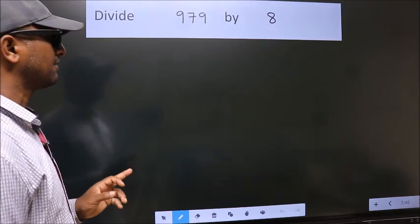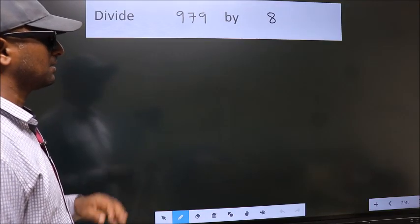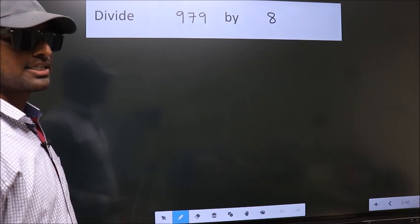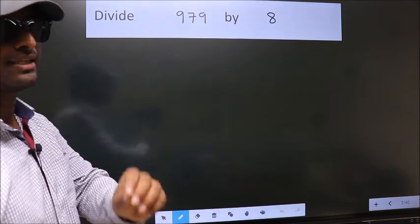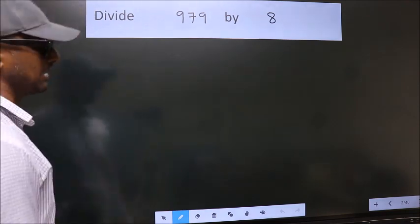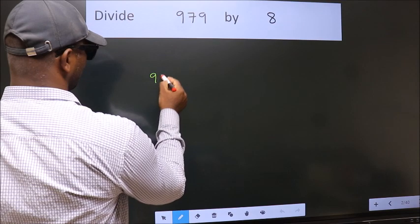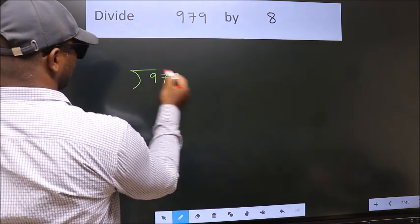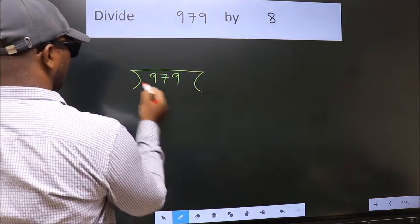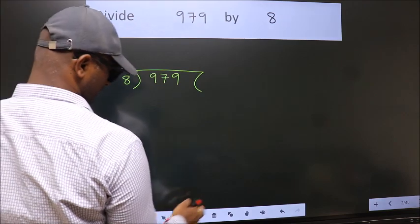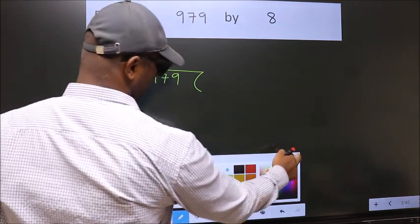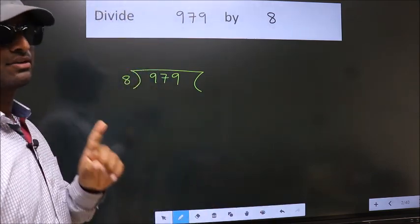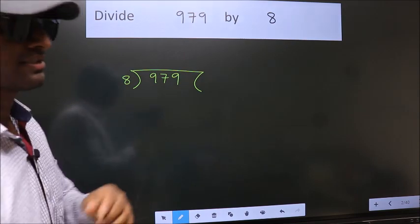Divide 979 by 8. To do this division, we should frame it in this way: 979 here, 8 here. This is your step 1.